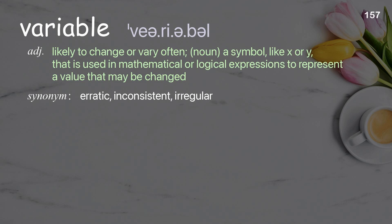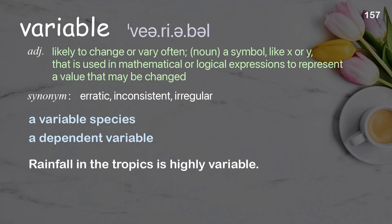Variable: Likely to change or very often changing. Noun: a symbol like X or Y that is used in mathematical or logical expressions to represent a value that may be changed. Examples: A variable species. A dependent variable. Rainfall in the tropics is highly variable.